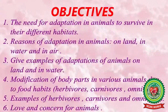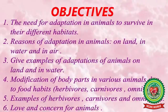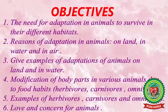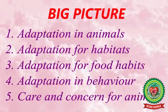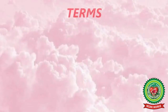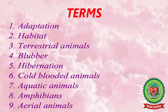The objectives also cover adaptations of animals on land, in water, and in air, with examples. We will study modification of body patterns in various animals due to food habits — herbivores, carnivores, and omnivores — as well as love and concern for animals. In this chapter we will study adaptation for habitats, adaptation for food habits, adaptation in behavior, and care and concern for animals.